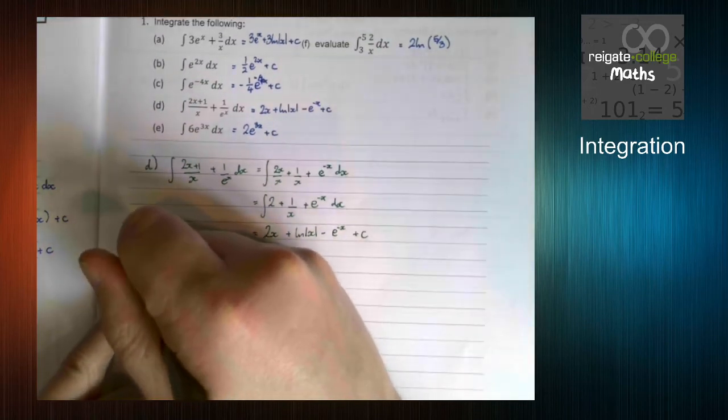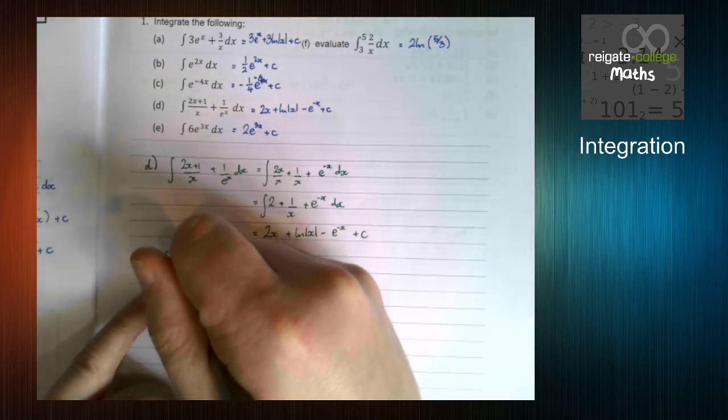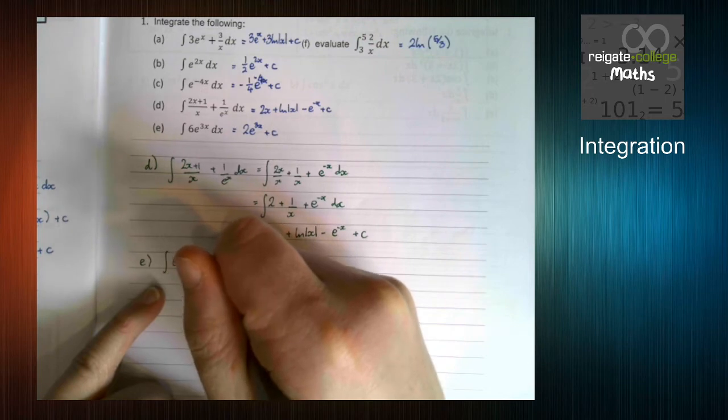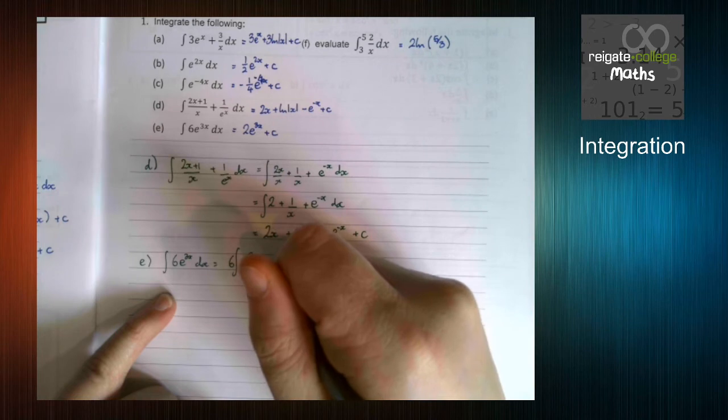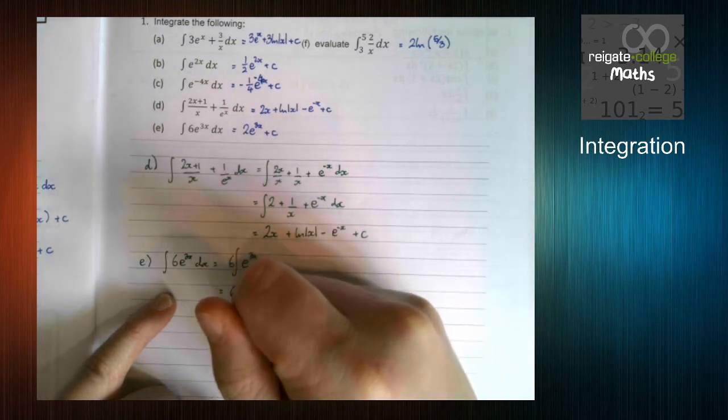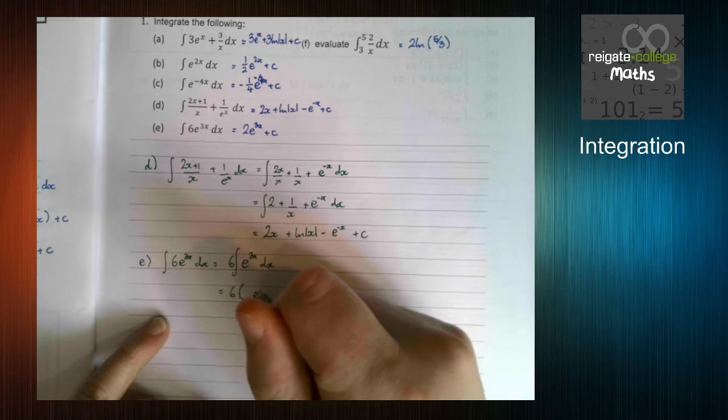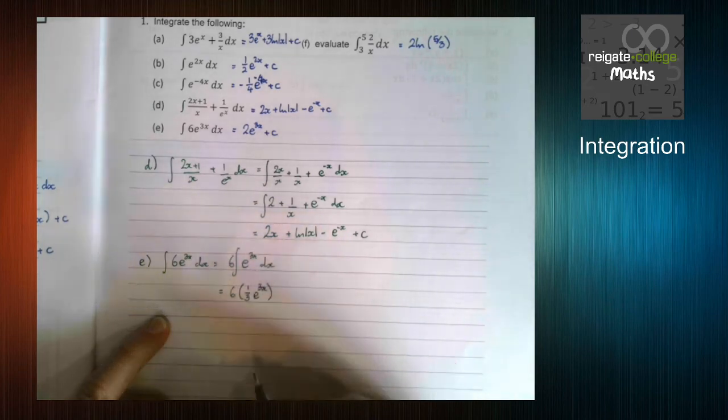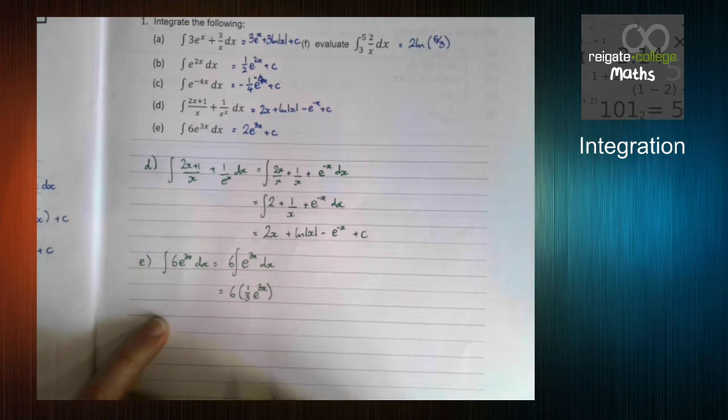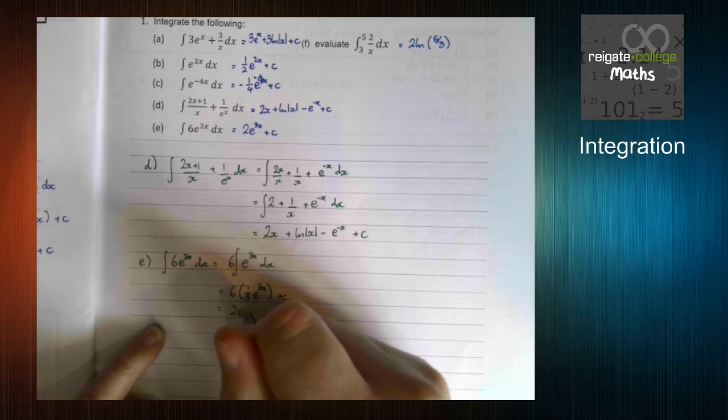With e, e's a little bit more straightforward. So we can think about this as 6 times the integral of e to the 3x, which is 6 times, so again, the e bit stays there. And then we divide by the coefficient of x. 6 times a third is 2.